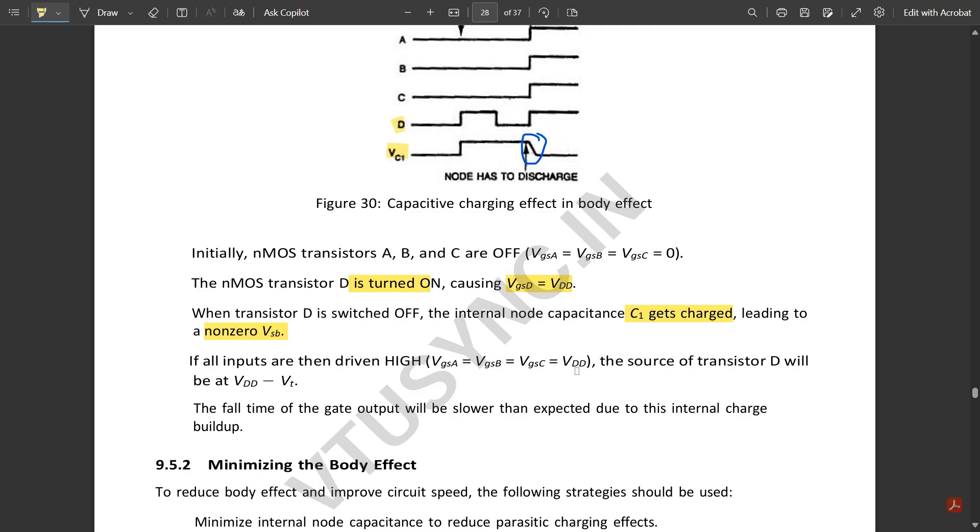The source of transistor D will be at Vdd minus Vd. The fall time of the gate output will be slower than expected due to its internal charge build up.